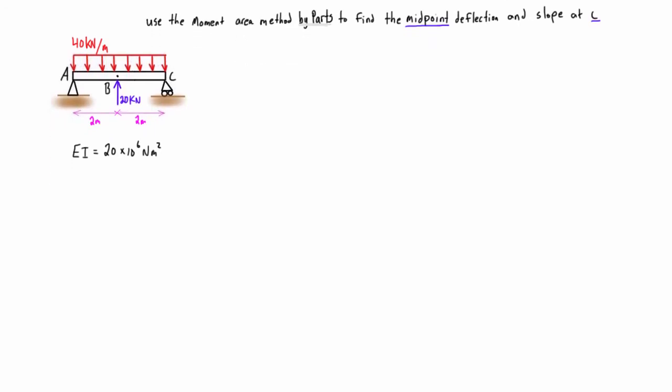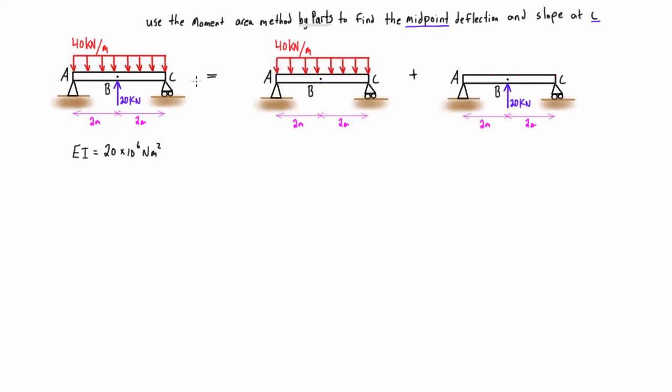But this time we're going to solve it using the moment area method by parts, and we just want to make sure that we get the same answer. So when we do by parts, all we have to do is we split the structure out. We redraw out the structure as many times as we need to, so there's just one load acting on it at a time like this. So this actual structure is equal to the sum of this plus this.